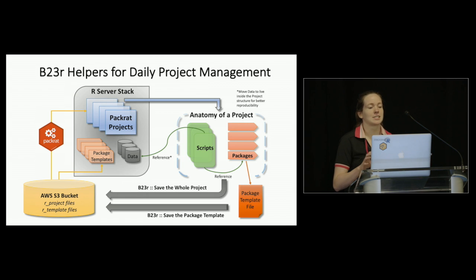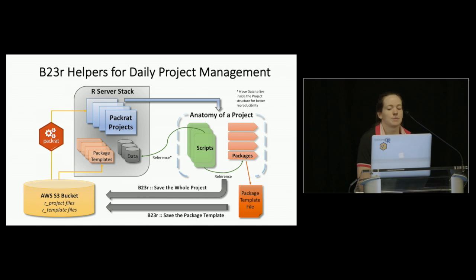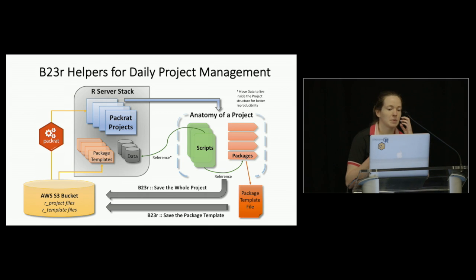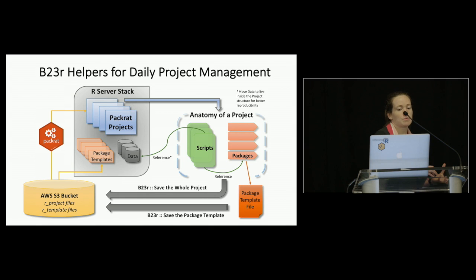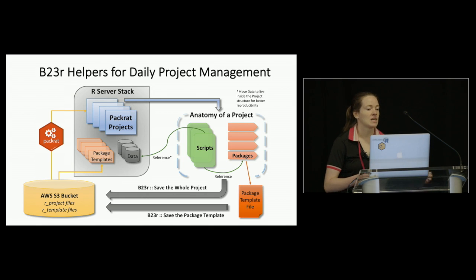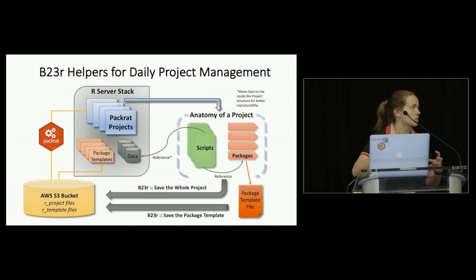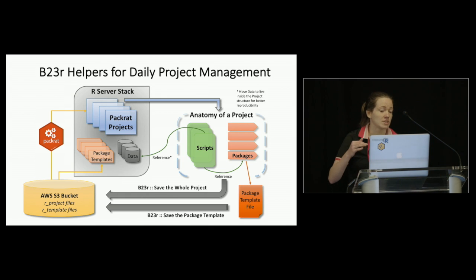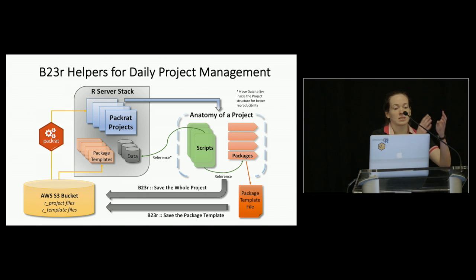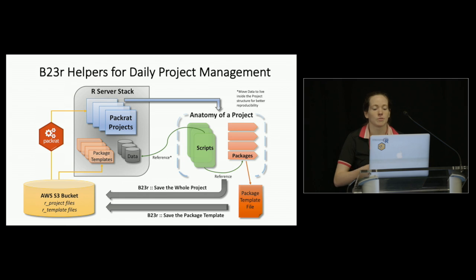Our solution for daily project management got a little complicated, but essentially what we decided to do was embrace the PackRat and RStudio project solution — use projects for everything and attach PackRat to every project. When we do that, we can take this whole system: all of the packages you want to use for a project, the project itself, the scripts, and use a function to connect your R server stack to an S3 bucket of your choosing. You can save out these whole projects and have them get pulled back into your new stacks the next day. You still have to restore projects and watch packages install again, but at least the process is automated.